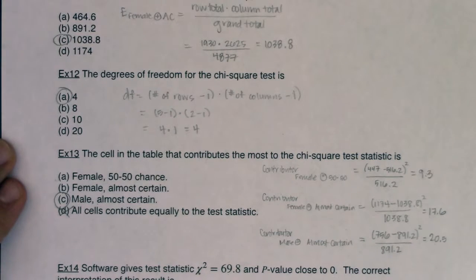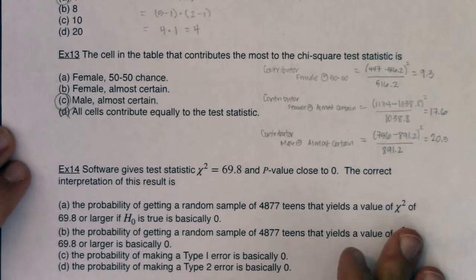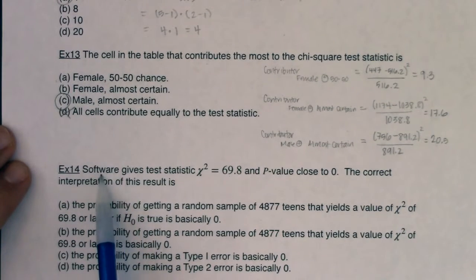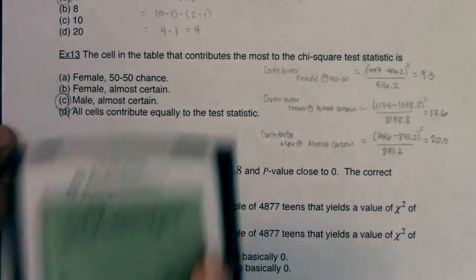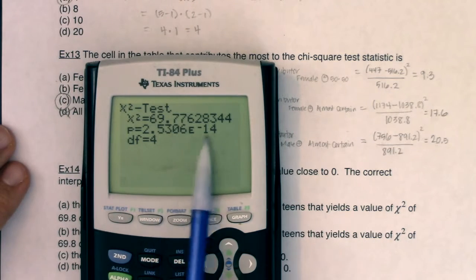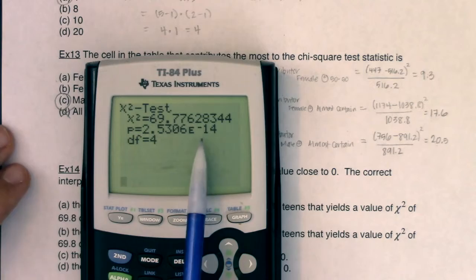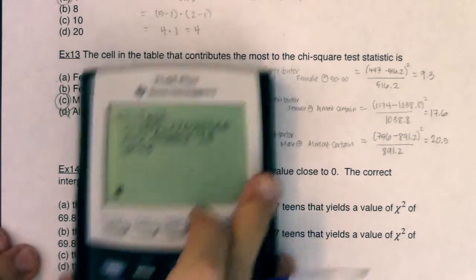So moving along, let's see what example 14 is asking of us. So here's the last one. On this page, the software or your calculator gives a test statistic of 69.8 and a p-value close to zero. Let's just check that. Our p-value, again, not 2.53. Don't forget the e to the negative 14. That's got, this number has 13 zeros in front of it. It is basically zero.